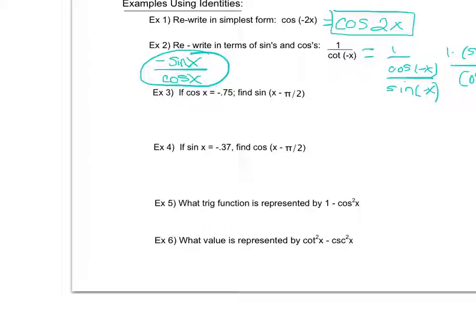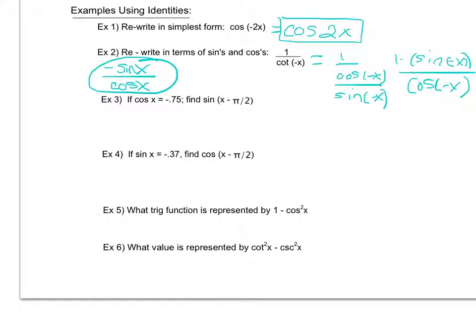In example 3, I'm given some information about cosine and asked to find sine of x minus pi over 2. I don't have a direct formula for that, but I do know from my co-function identities that sine of pi over 2 minus x equals cosine of x. If I could rewrite sine of x minus pi over 2 in that form, I could substitute cosine of x or negative 0.75. I notice these two expressions are almost the same — they're opposites: positive pi over 2 versus negative pi over 2, and negative x versus positive x.